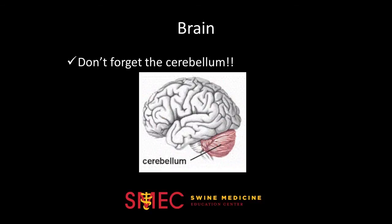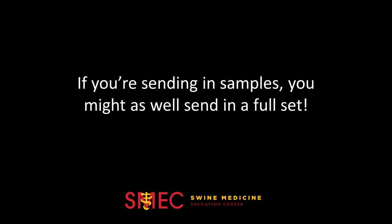Finally, rotate the pig and collect samples of the brain. When including brain samples, it is important to get both fixed and fresh samples of the cerebrum and cerebellum. The cerebellum is often forgotten, but it is important for diagnosticians because meningitis often starts in the cerebellum. Remember that you can't send in too many tissues, so it does no harm to send in excess tissue. They can save tissues in case it is decided to run a different test a couple days later, so if you are taking the time to submit samples, you might as well include a full set of tissues.